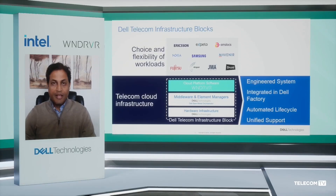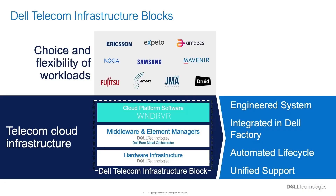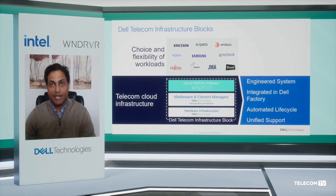As telco operators go through transformation from a vertically integrated RAN solution to a virtual RAN and open RAN deployment, there are a couple of challenges. The first challenge is integration: with an open disaggregated RAN network, multiple pieces need to be integrated — hardware, cloud platform, RAN CU/DU components, OSS/BSS, and management layer. What was previously done by a vertical solution vendor now needs to be done either by the customer themselves or a system integrator.